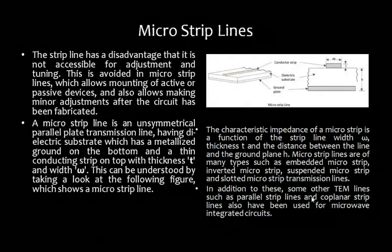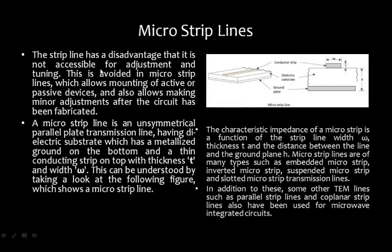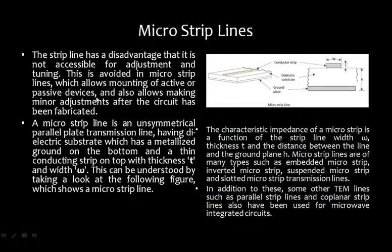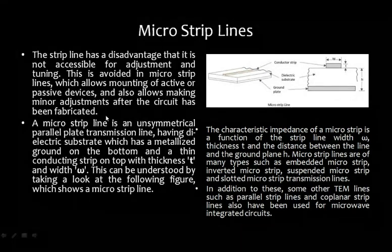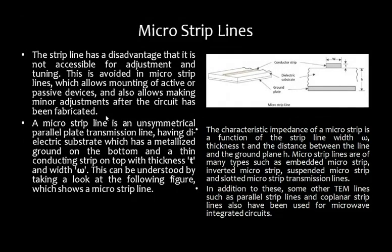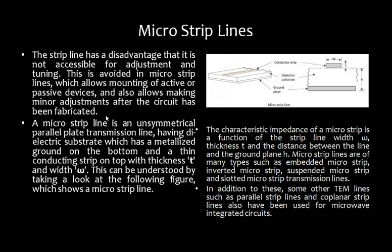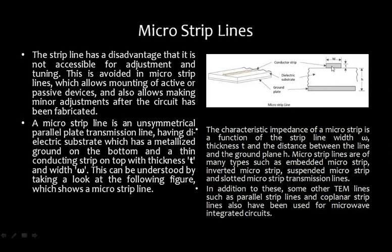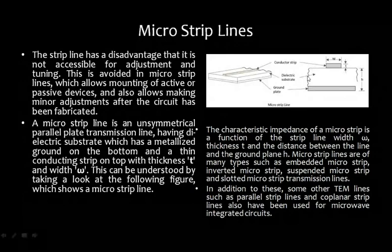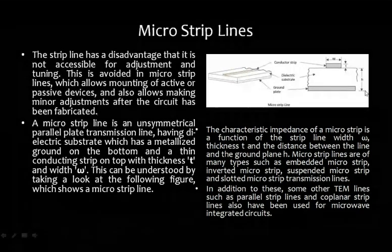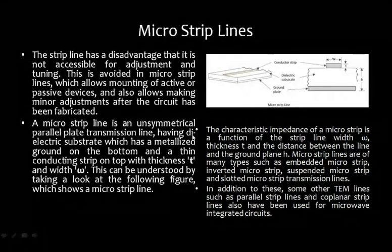Next are microstrip lines. The disadvantage of strip lines is that they are not accessible for adjustment or tuning — once designed, no changes can be made. Microstrip lines overcome this by allowing the mounting of active and passive devices and permitting minor adjustments after fabrication. The microstrip has a conductor of width W and thickness T on a dielectric substrate, with a ground plane below, and the distance between the conductor and the ground plane is H.